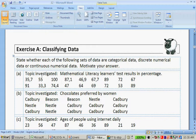The first one is Mathematical Learners Test Results in Percentage: 35.7, 55, 100, 87.1, 46.9, 67.7, 89, 72, 67, 91, 33.3, 74.4, 47, 64, 69, 72, 53, and 89. Now, because this is numbers, it is definitely numerical data. But because we have comma 1, comma 7, comma 4, it is continuous numerical data.